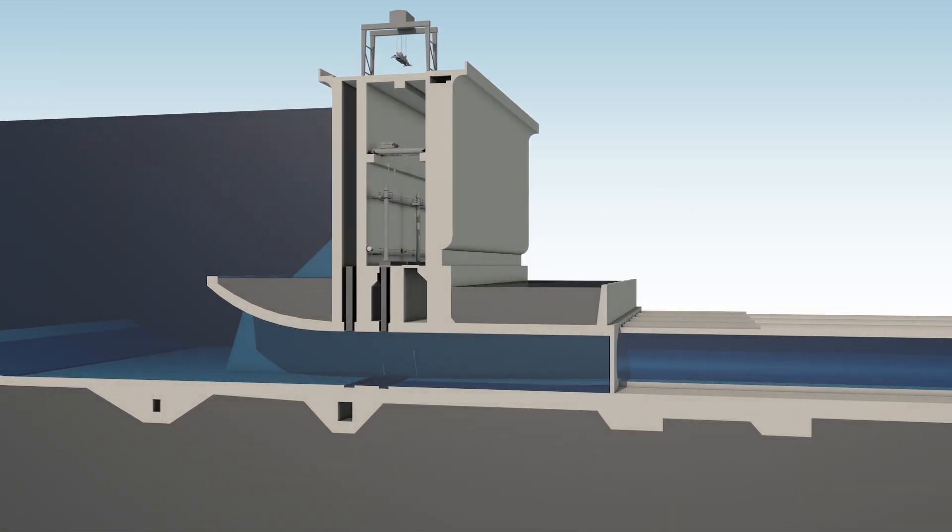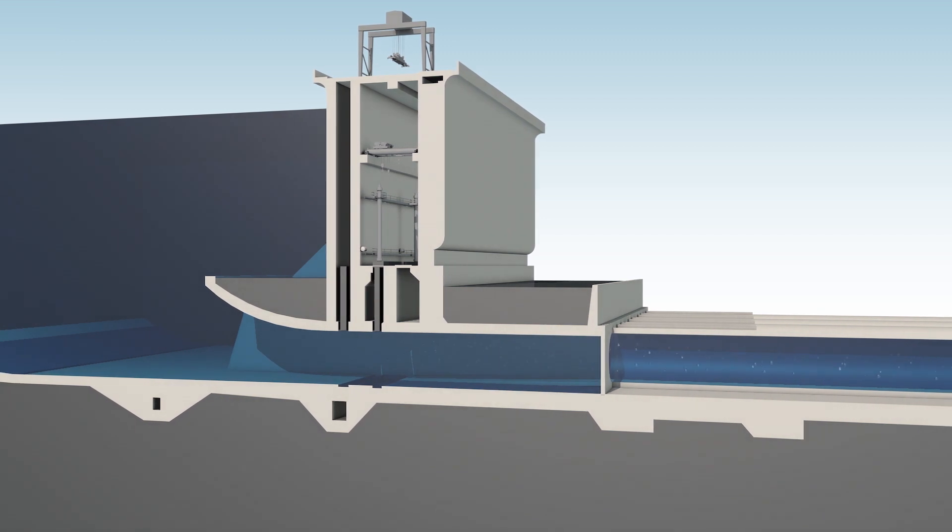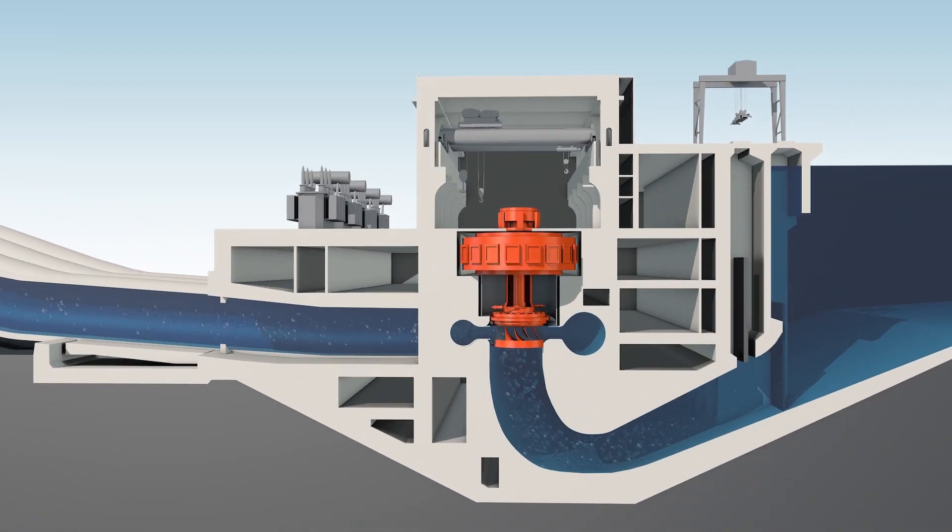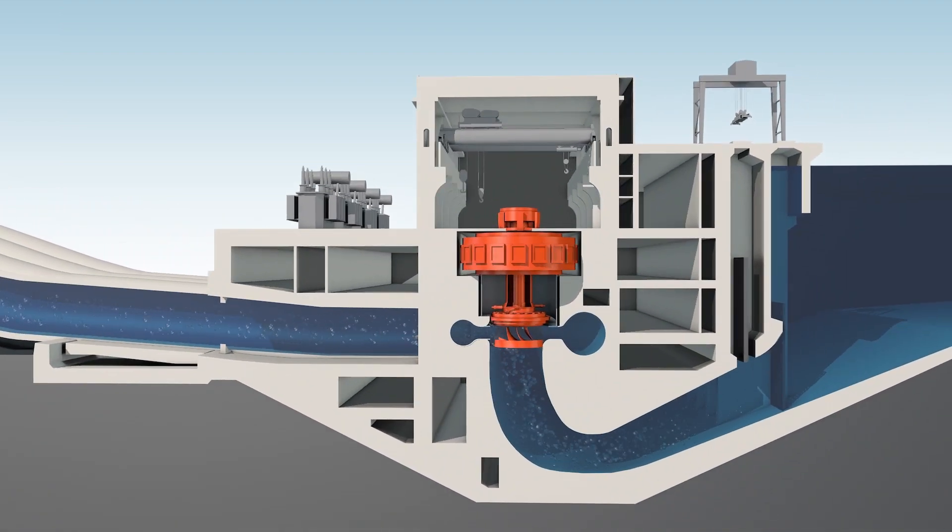During the daytime, when electricity demand is higher, the direction is switched and water from the upper reservoir is released back down through the penstocks into the turbines, making them spin. The turbine runners rotate around the same shaft, but now in the opposite direction, thus driving the generators in order to produce electricity.